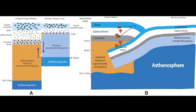These were formed by the equivalent of continental flood basalts, such as the Deccan Traps in India and the Snake River Plain in the Pacific Northwest of the United States.